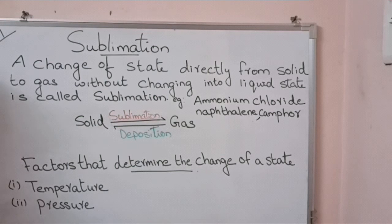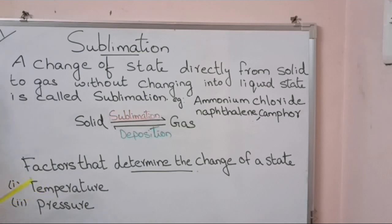We have learned that the factors that determine the change of state are temperature and pressure. We have completed the first factor, temperature. Let us now talk about the second factor, which is pressure.